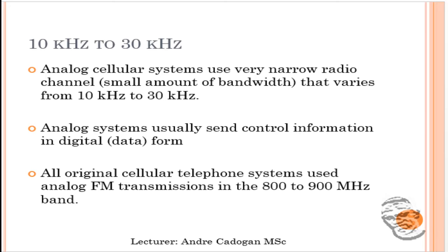It operates between 10 kHz to 30 kHz on a narrow band. Analog systems usually send control information in digital form. So even though it was analog, it still has some form of digital control information taking place, like call handling — call waiting, handoff, and so on. The original cellular telephone system operated on analog FM transmission between the 800 and 900 MHz band, which some older cellular phones used.